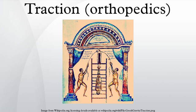In orthopedic medicine, traction refers to the set of mechanisms for straightening broken bones or relieving pressure on the spine and skeletal system. There are two types of traction: skin traction and skeletal traction.